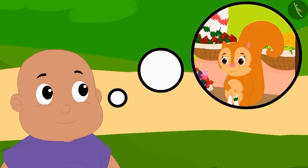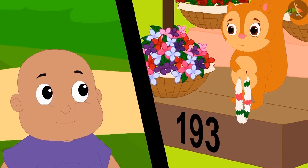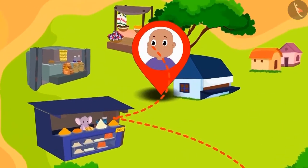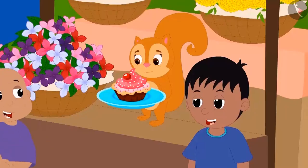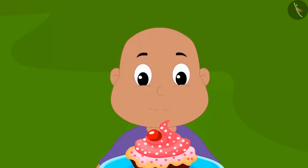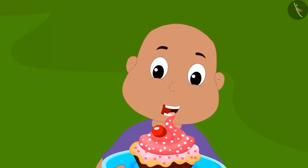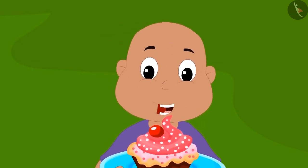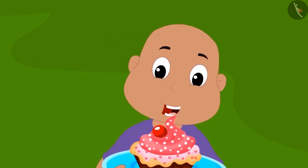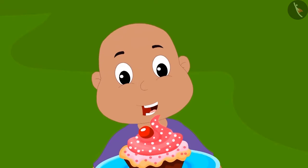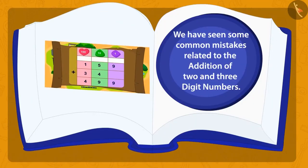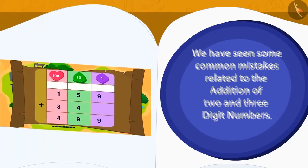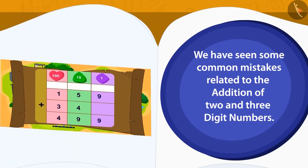Bablu remembered he had seen this number at Chanda's shop and thought that it may be his last location. With this thought, Bablu went to Chanda's shop. On reaching there, Bablu saw that Raju had hidden a cake to celebrate his birthday. Look how happy Bablu looks! Children, in this lesson we have seen some common mistakes related to the addition of two and three digit numbers.